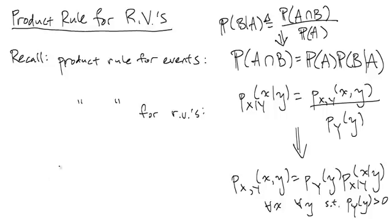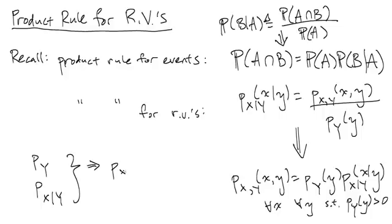The main thing here is that if we have the tables for P(Y) and P(X|Y), then from these two I can get the joint probability table for P(X,Y).